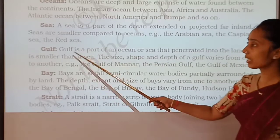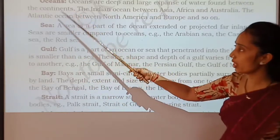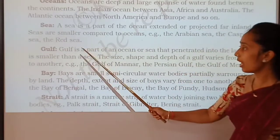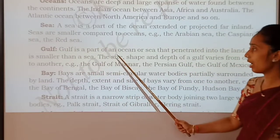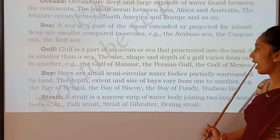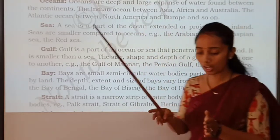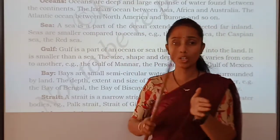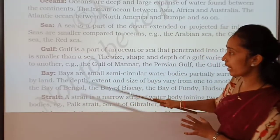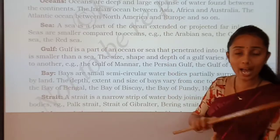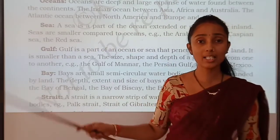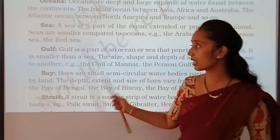Then, what is a gulf? Next to sea is the gulf. Gulf is the part of an ocean or a sea that penetrates into land. Gulf means: this is water on one side, water on another side, penetrated in the sense separated — the water body which is separated by land is called a gulf.